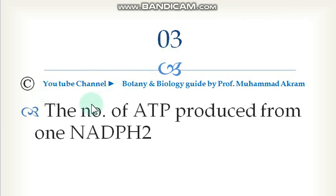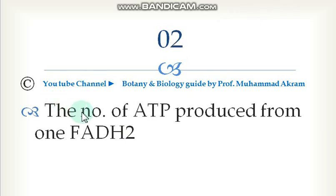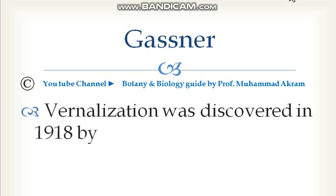The number of ATP produced from 1 NADH2 is 3. The number of ATP produced from 1 FADH2 is 2.